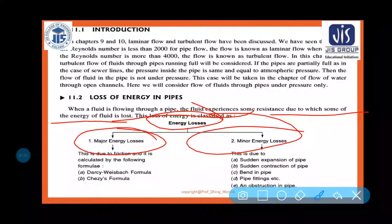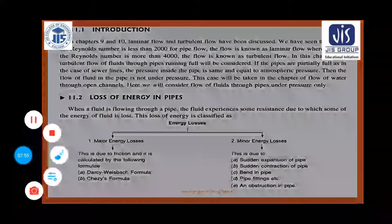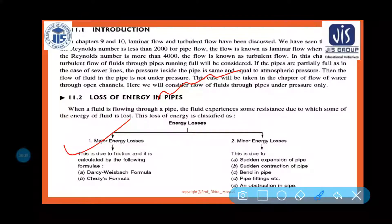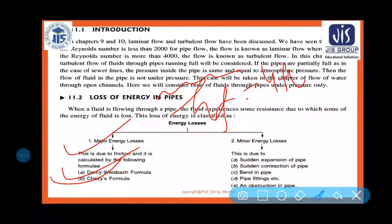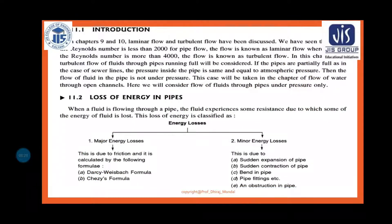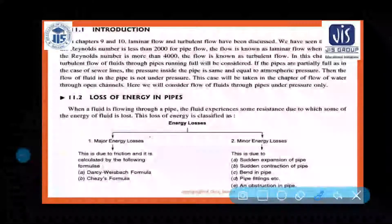Major energy loss is the maximum energy lost due to friction. It is calculated using the Darcy-Weisbach formula and Chezy's formula. The Darcy-Weisbach formula gives head loss hf = 4fLV²/2gD, where this represents the major loss due to friction in the pipe.